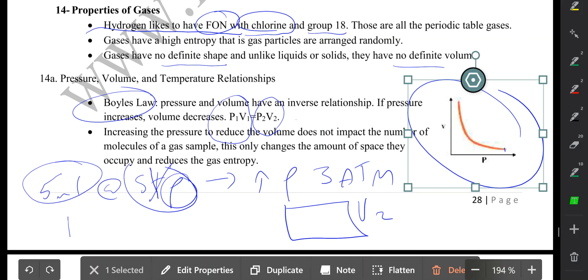So now we're only dealing with initial volume and initial pressure. Initial pressure is standard, which makes it 1 atm according to table A. Initial volume is 5 milliliters. Now my final pressure was given to me in the question as 3 atm, and my final volume is unknown.